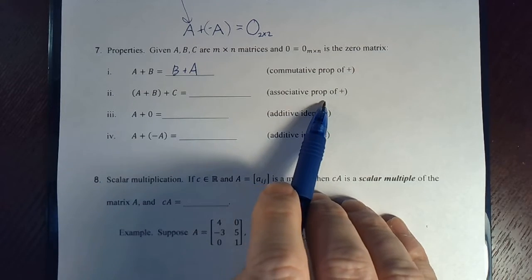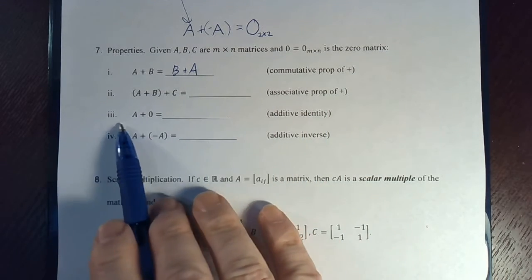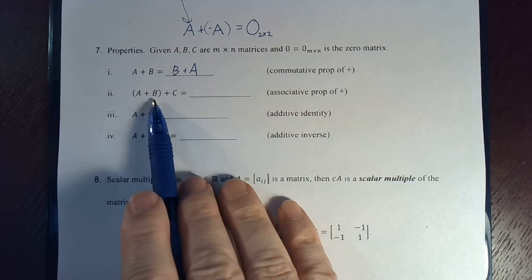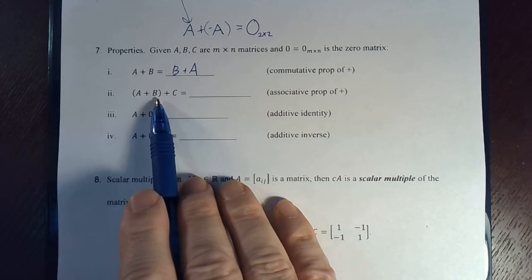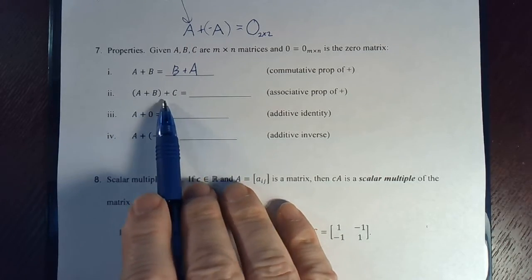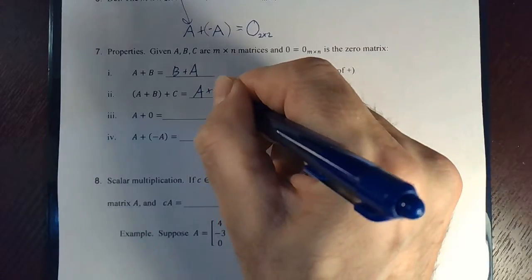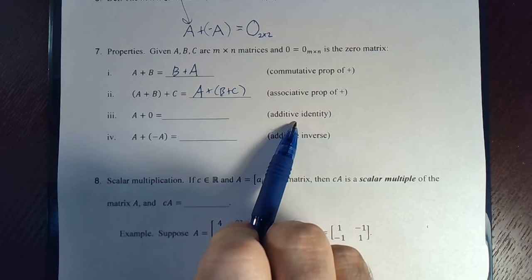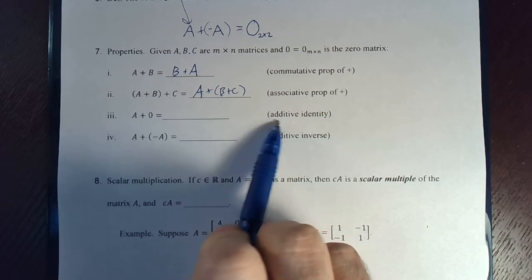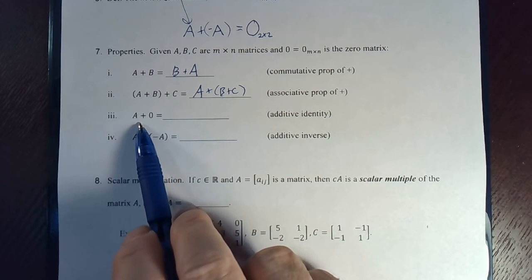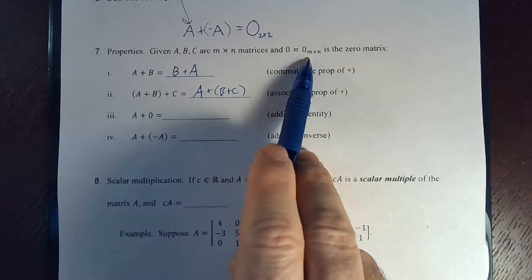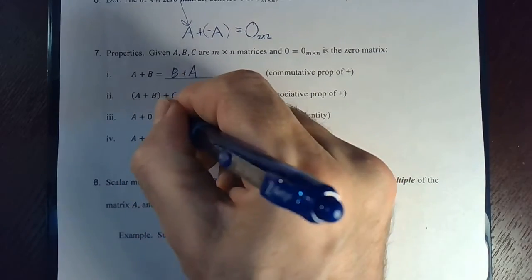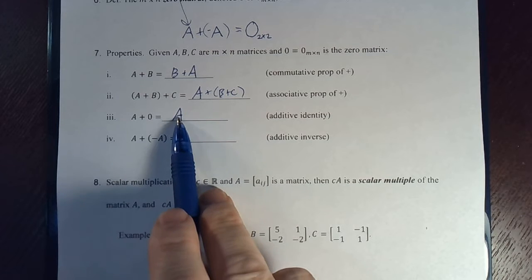And then the associative property of addition. That's the one where you keep the matrices in the same order, A, B, C, but you regroup them. You put the parentheses, instead of around A, B, you put the parentheses around the B plus C. So A plus B plus C in parentheses. And the additive identity, just like with real numbers, you know, 10 plus 0 equals 10. It doesn't change the number, so 0 is called the additive identity for the real numbers. Well, just like this, the zero matrix is the additive identity for matrices of this size, M by N. So A plus the zero matrix gives you the matrix A. It doesn't change it at all.